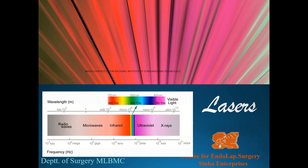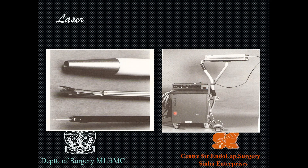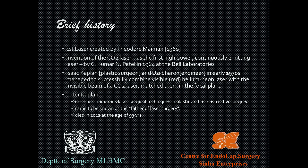The next important energy source used in general surgery is the laser. This is depicted on the electromagnetic spectrum: we have traveled from electrosurgical energy in the radio wave area through visible light. Lasers work in the near infrared, infrared, or near ultraviolet, and even visible light. Briefly on history: the first laser was created by Theodore Maiman in 1960, and the first carbon dioxide laser as a high-power continuously emitting laser was created by C. Kumar Patel, an Indian working at Bell Labs, in 1964.